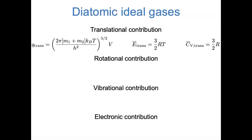Going back to our summary slide, we can fill in the electronic contributions. Because only the lowest energy electronic level is occupied, the electronic partition function has just one term: the degeneracy of the ground state times the Boltzmann factor for the electronic ground state, whose energy is negative De. The molar electronic energy is simply minus De per molecule, and the electronic heat capacity is zero because the electronic energy doesn't change with temperature. So diatomic molecules are essentially always in their electronic ground state, and we'll mostly ignore this contribution going forward.